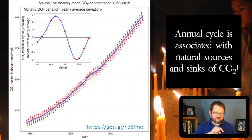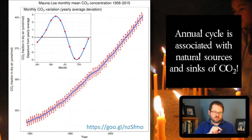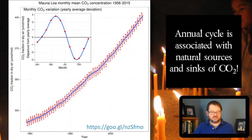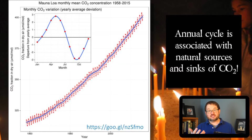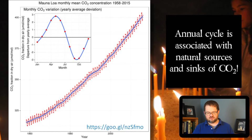If you look closely at the chart, there's a lot of wiggling around that trend — there's a very strong annual cycle to carbon dioxide, which is what the inset diagram is showing. That annual cycle is associated purely with natural sources and sinks of carbon dioxide. Sources are processes that add CO2 to the atmosphere; sinks are processes that remove it.